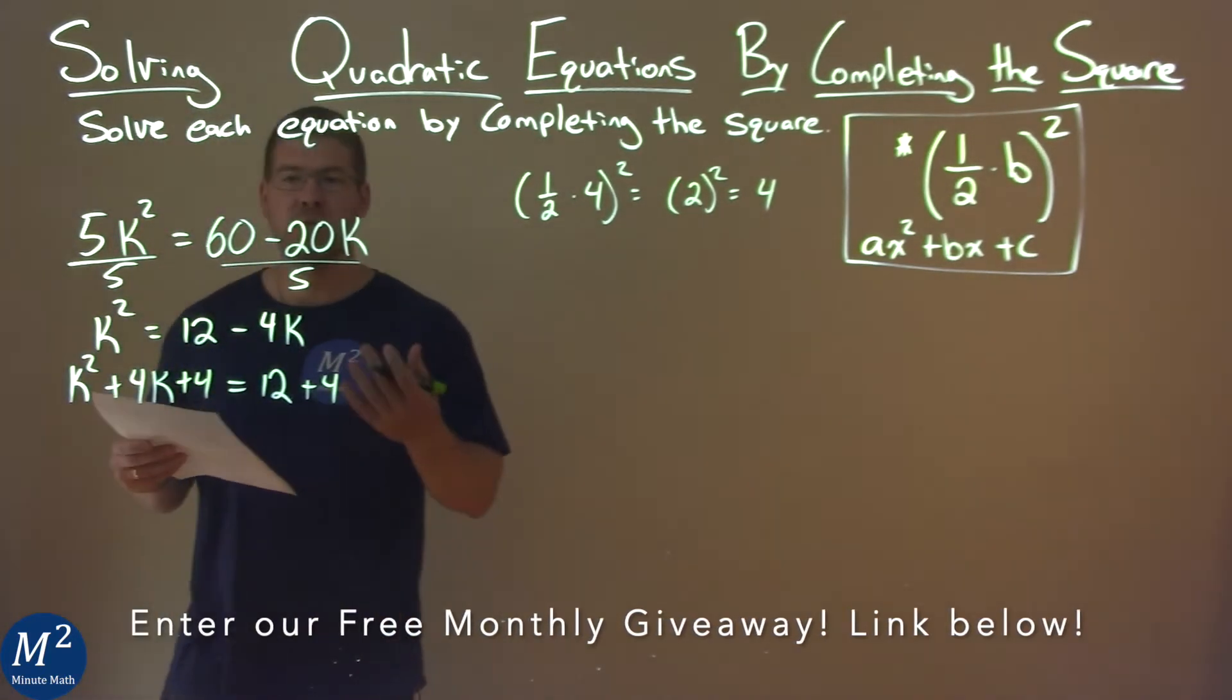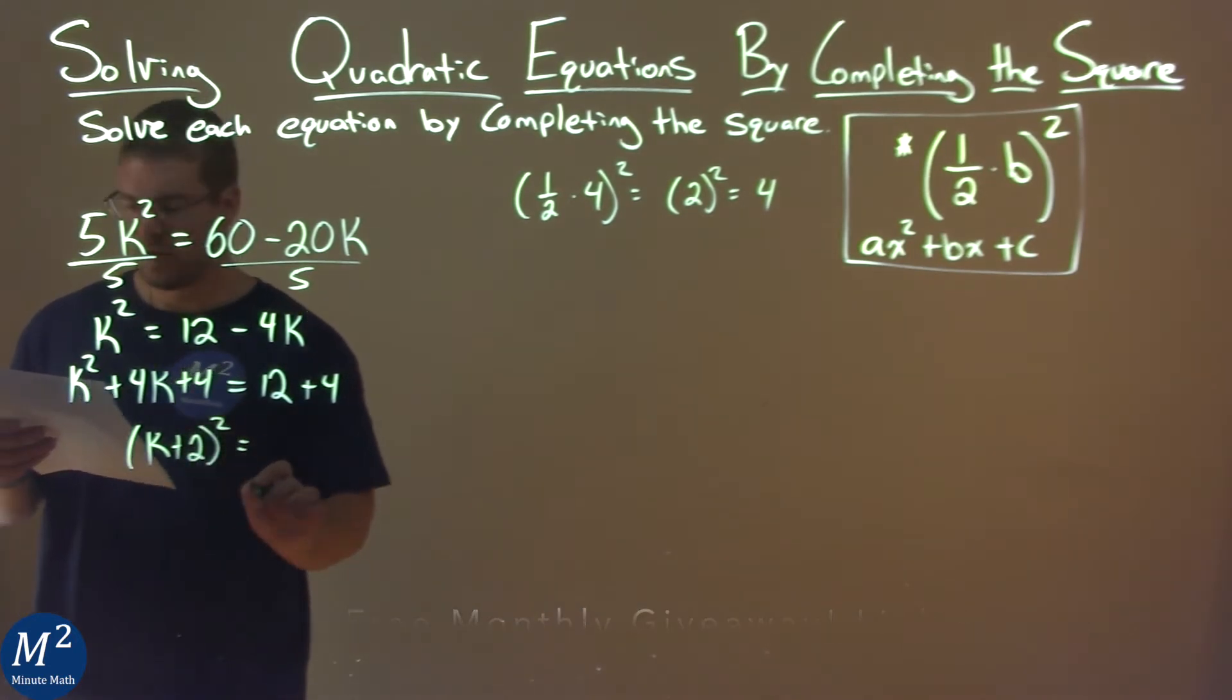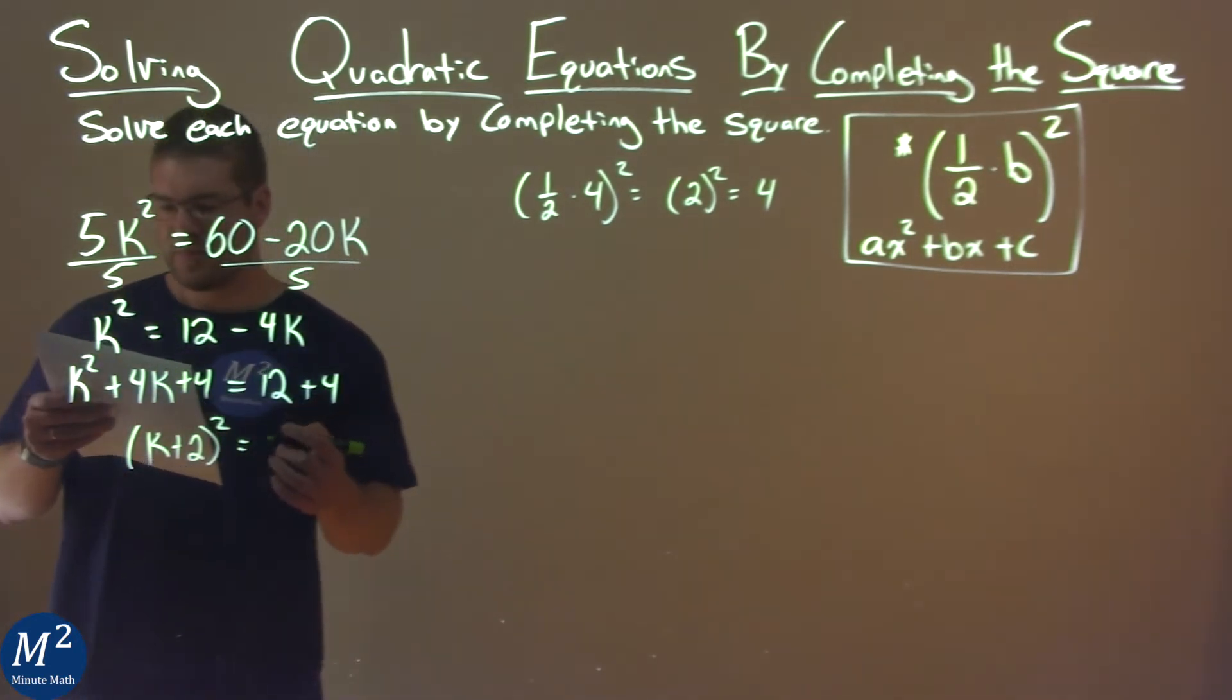The left-hand side becomes a perfect square. k plus 2, all squared is equal to, well, 12 plus 4, which is 16.